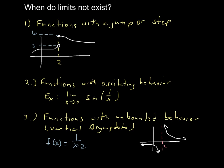Another case where the limit won't exist is when we have oscillating behavior — continuously bouncing back and forth between two values. An example is the limit as x approaches 0 of sine of 1 over x; we'll work with that in class using the calculator. Additionally, when we have unbounded behavior — a vertical asymptote — the limit does not exist at that value. So the limit as x approaches 2 of f(x), where f(x) equals 1 over (x minus 2), does not exist due to the vertical asymptote.